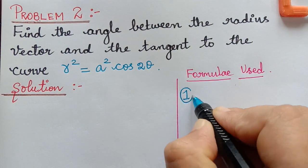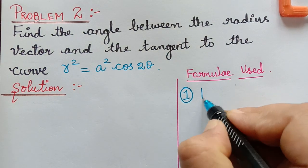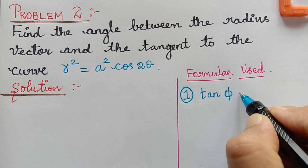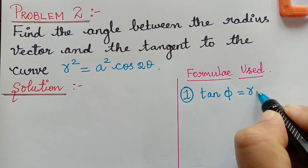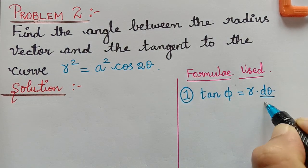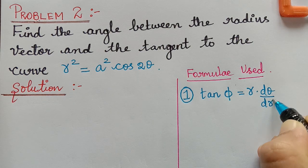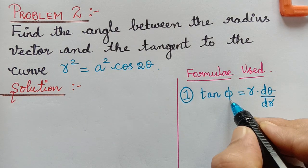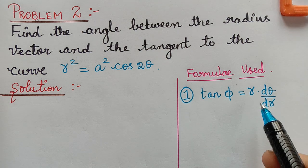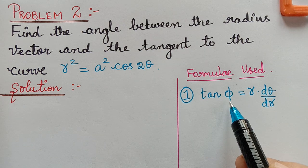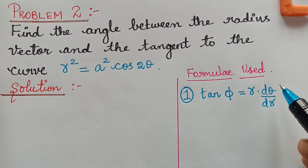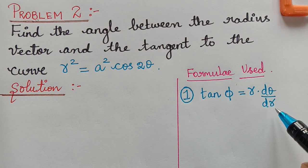The first formula we list out is: tan φ = r · (dθ/dr). From this, we will find the angle φ by taking tan inverse on both sides, so φ = tan⁻¹(r · dθ/dr).